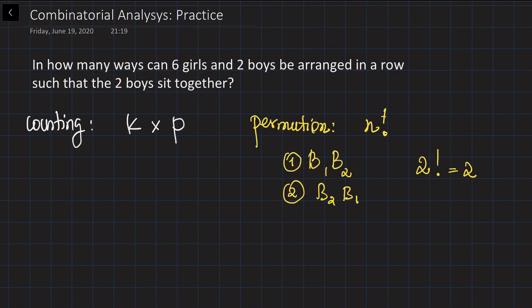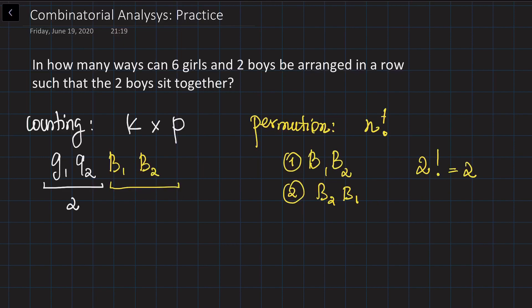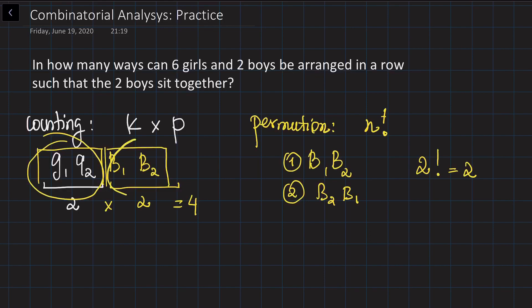Now a small example for the counting rule. Say you have two girls — girl one and girl two — and boy one and boy two. We can rearrange the two girls in two factorial, which is two ways. We can also rearrange the two boys in two different ways. So altogether, if we are just rearranging the girls together and boys together, there are two times two equals four different cases by the counting rule.